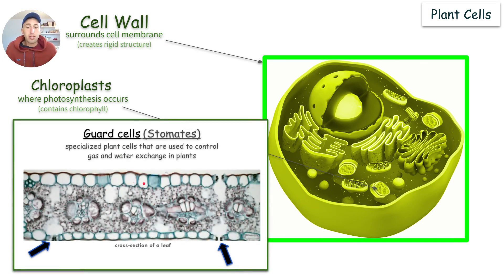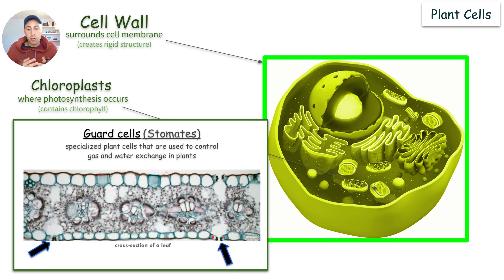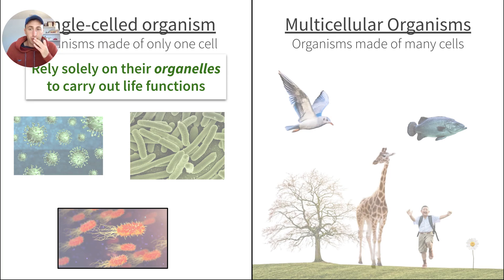Plants also have something called guard cells, also referred to as stomates. These are specialized plant cells used to control gas and water exchange in plants. Plants need water and CO2 in order to make glucose. The guard cells open and close to allow water and CO2 to come in — if there's not enough, they open up; if there's enough, they close.